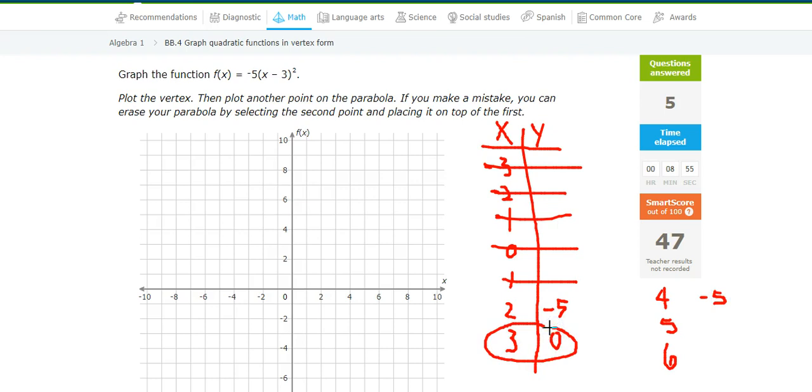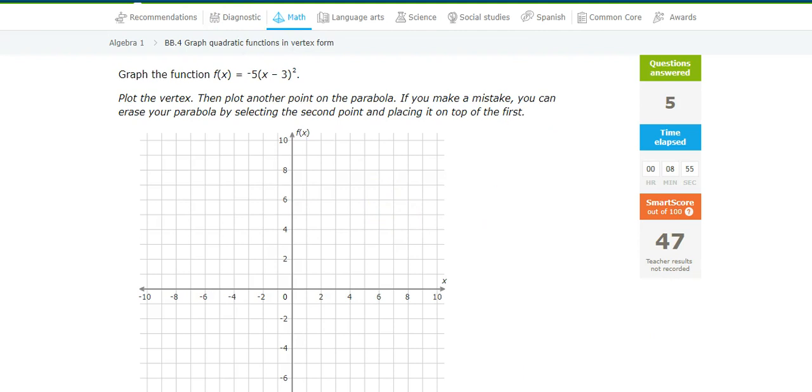So 3, 0, 4, negative 5. 3, 0, 4, negative 5.